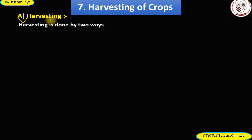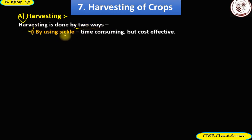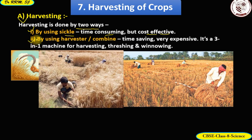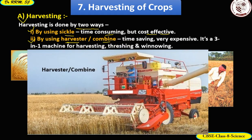Harvesting is done in two ways. The first way is using a sickle — a small iron tool with sharp teeth. Using a sickle, harvesting is done manually; it takes a lot of time but is cost effective. The second way is using a harvester or combine. Harvesting with this machine saves a lot of time but is very expensive. In fact, it is a three-in-one machine for harvesting, threshing, and winnowing.